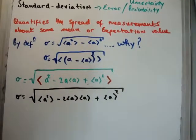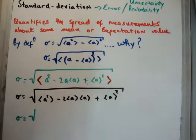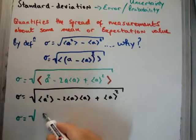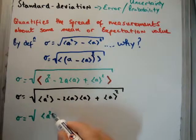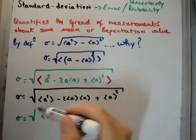So, we can rewrite this very simply, that sigma, the standard deviation, or the RMS deviation, is simply going to be equal to the average of A squared minus the average of A to be squared.